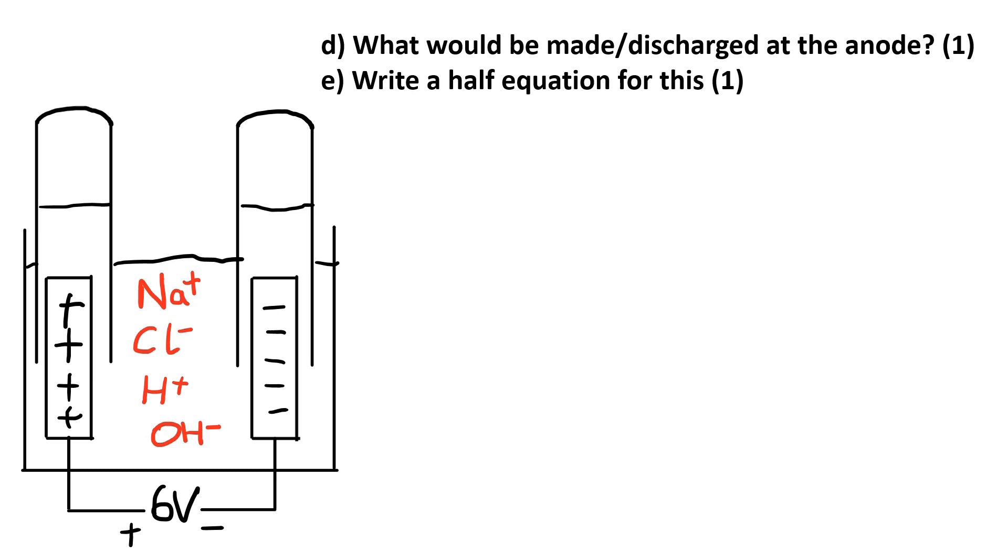Question D: what would be made or discharged at the anode and write a half equation for this. So first of all, sketch out the anode which is positive and remember opposite charges attract, so that will attract the negative ions—in this case the chloride ion Cl- and the hydroxide ion OH-. But which one of those would actually turn into something?